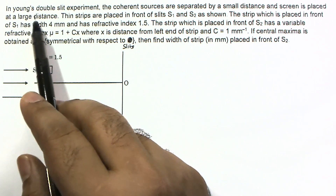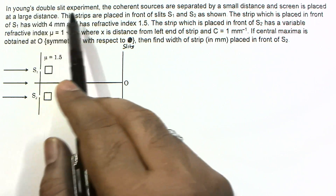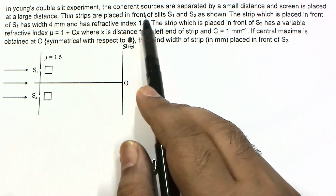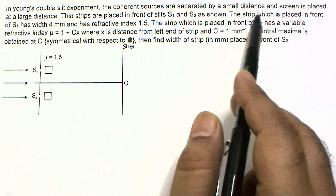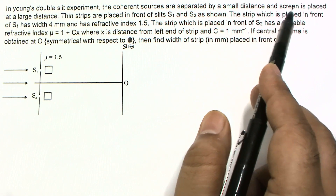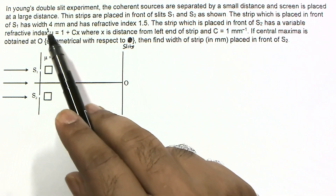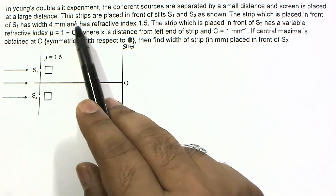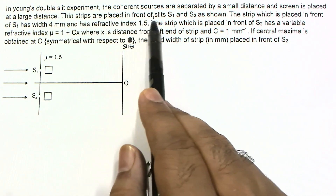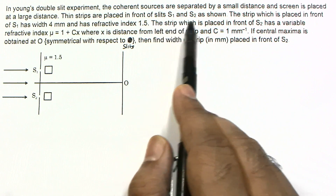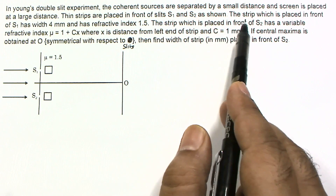In this question, in Young's double slit experiment, the coherent sources are separated by a small distance and screen is placed at a large distance. Thin strips are placed in front of slits S1 and S2 as shown.